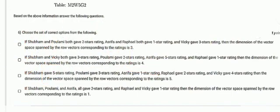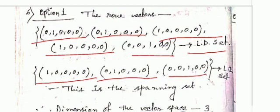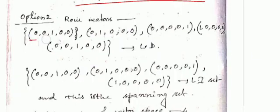For option one, the row vectors include [0, 1, 0, 0, 0]. This is a linearly dependent set, while [1, 0, 0, 0, 0], [0, 0, 0, 0, 1], and [0, 0, 1, 0, 0] form a linearly independent set and the spanning set — so the dimension of the vector space equals three. For option two, the given row vectors are linearly dependent, and the linearly independent spanning set gives a dimension of four.